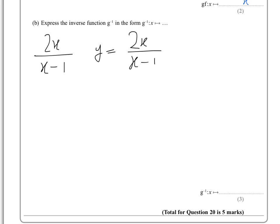So therefore, if you multiply both sides by the x minus 1, you're going to get y times x minus 1 equals 2x.